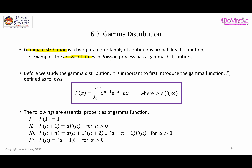Before we study the gamma distribution itself, it is important that we first introduce the gamma function, denoted by this symbol. The gamma function is defined as an integral from zero to infinity, where the value of alpha takes any value as long as it is between zero and infinity.